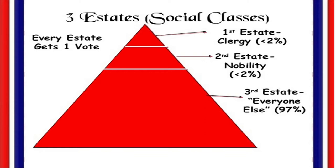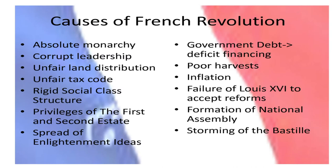Causes of the French Revolution: I. International struggle for hegemony and empire outstrips the fiscal resources of the state. II. Political conflict — conflict between the monarchy and the nobility over the reform of the tax system led to paralysis and bankruptcy. III. The enlightenment impulse for reform intensifies political conflicts, reinforces traditional aristocratic constitutionalism.